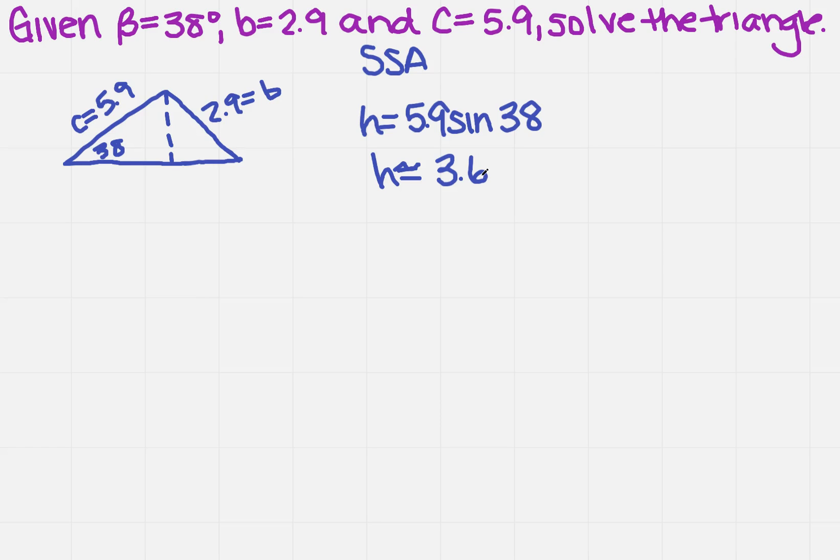Now, our rule says once we have the height, we need to compare B with the height. So we said that B is 2.9. The height, or the altitude, is 3.6.